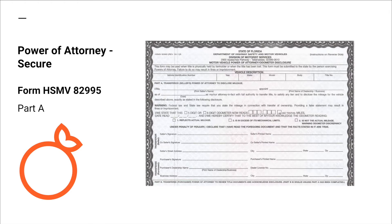Part A is used at the time of trade if the title is not available — for example, it may be a lost title or it may be held electronically. If the title is available for transfer, you must use form A2053 instead.